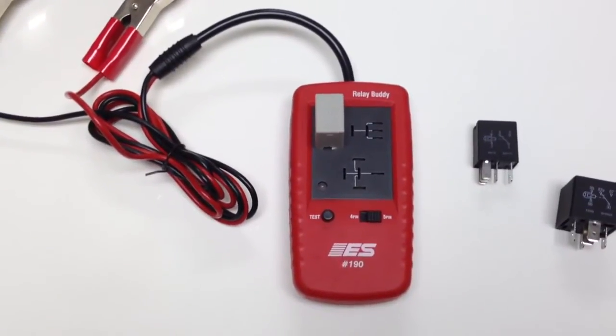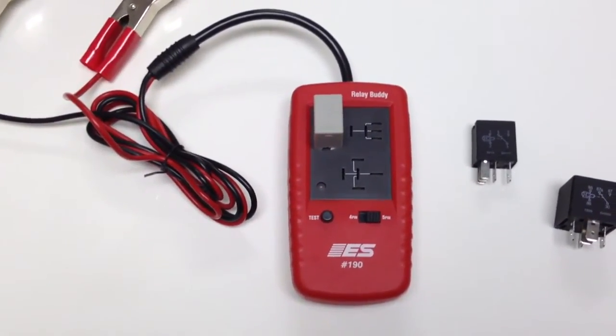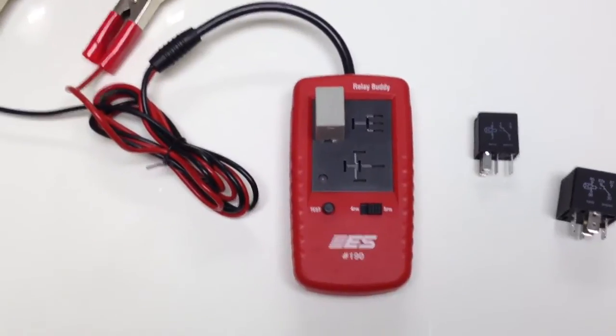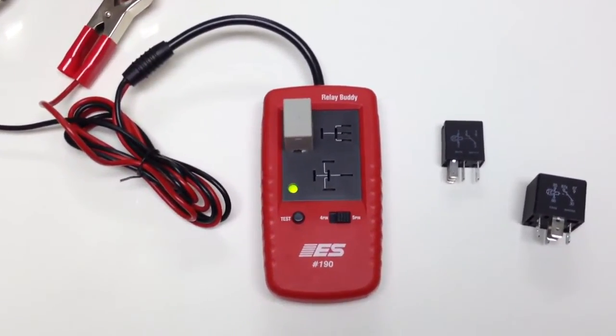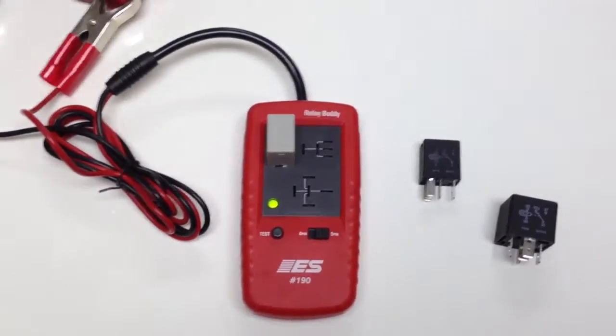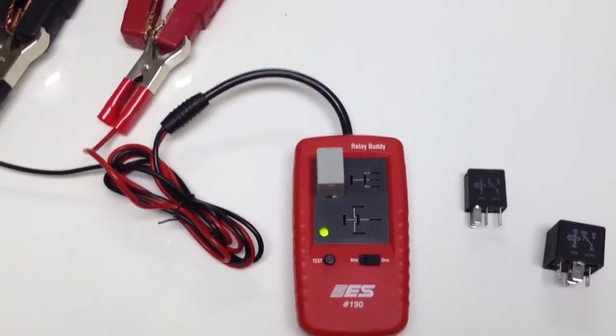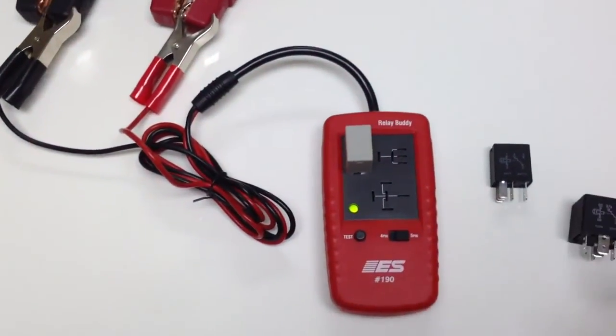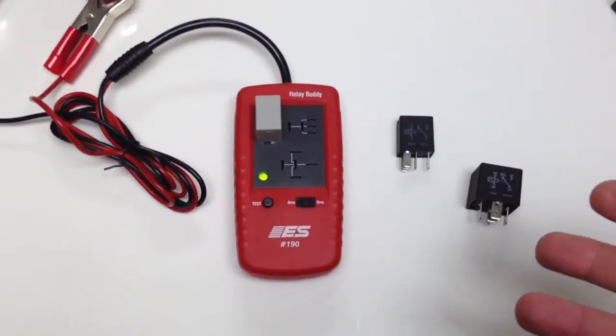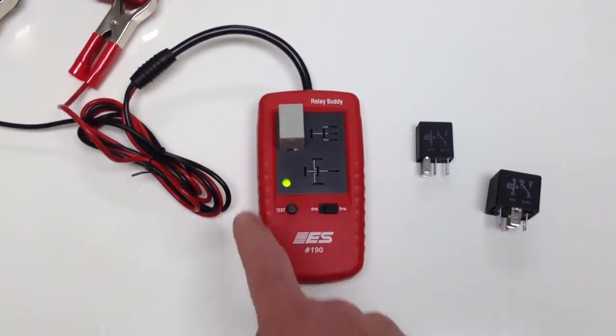The Relay Buddy cycles and switches the relay 10 times, and during the test we load the switch contacts. If we see any excessive resistance, we see a voltage drop there and we'll fail the relay. Now this is a good relay. It comes up green. If the relay were to test bad, this would show up as red.